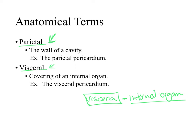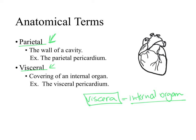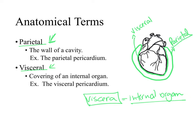Surrounding the heart we have the pericardium. If we zoom in at the pericardium, we can see that there are two layers: one layer covering the heart and another layer a little further away from the heart. The layer that is in contact with the heart — the internal organ — is the visceral pericardium. And the layer that is further away and not in direct contact with the internal organ is the parietal pericardium.